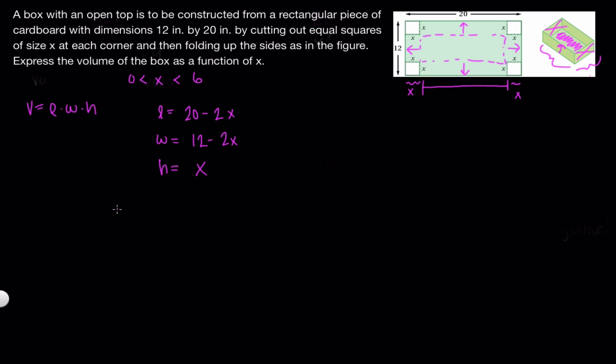So putting it all together, we would have that volume equals (20 - 2x) times (12 - 2x) times x. And simplifying, we get 240 minus 40x minus 24x plus 4x² times x.